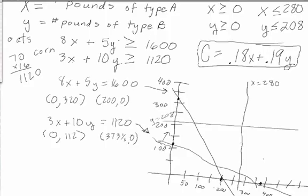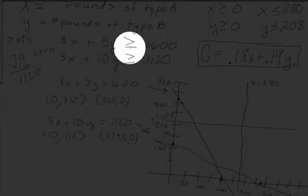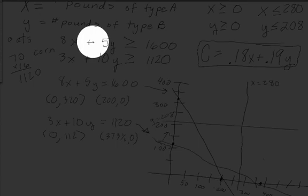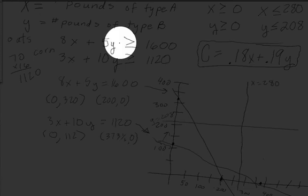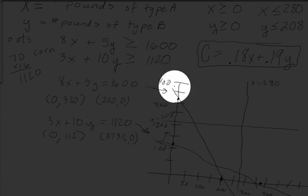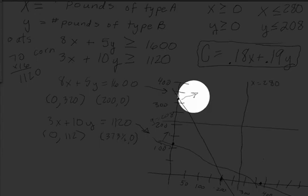We do the same thing for our other equation 8x plus 5y is greater than or equal to 1600. Again here's our y, there's no negative. If there was a negative we'd just have to flip the inequality, that's the only difference. So in this one y is greater than or equal to, that means we'd be shading above that line.